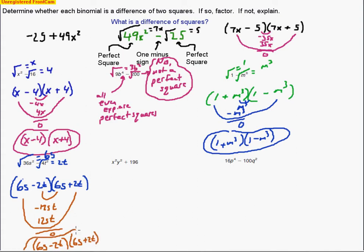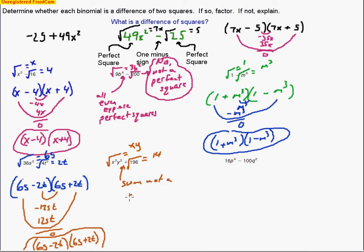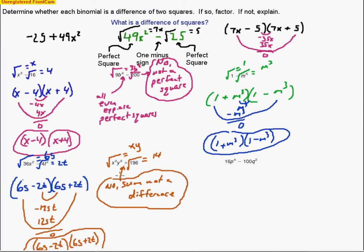For the next problem, x²y² is a perfect square because x times y times x times y makes x²y². And 196 is a perfect square since 14 times 14 equals 196. However, both terms are added together — this is a sum, not a difference. We need one minus sign, but there isn't one here. So this is not a difference of squares; the explanation is that it is a sum, not a difference.